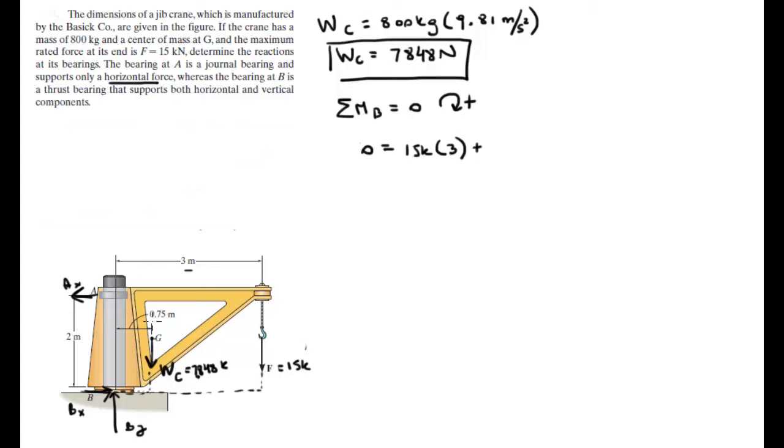15 kilonewtons times the 3 meters and it's positive because it wants to turn it clockwise plus the moment being created by the weight which is the system here of 0.75 so it's 7.848 kilonewtons times 0.75 and minus A which turns this lever arm right here which has a length of 2, minus Ax times 2 is equal to 0.